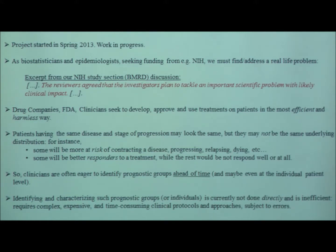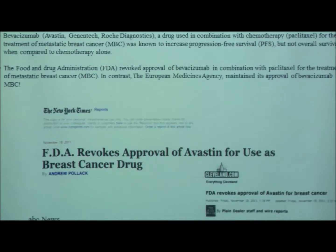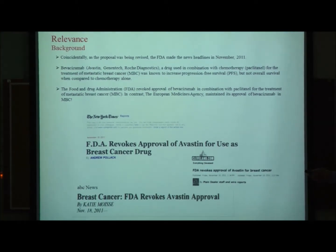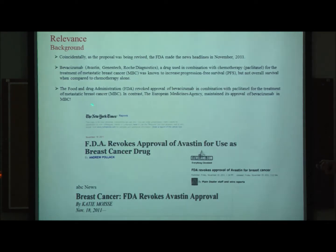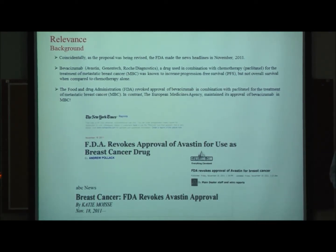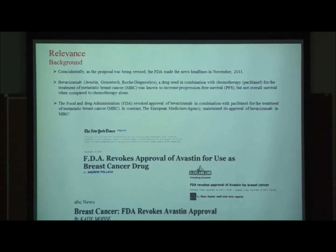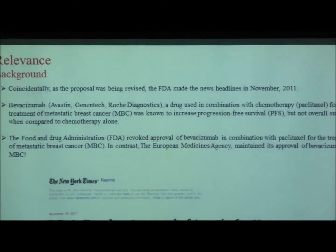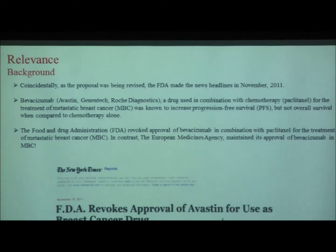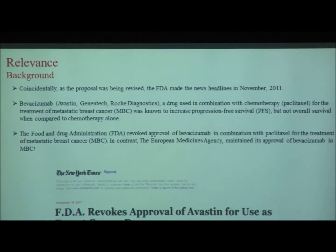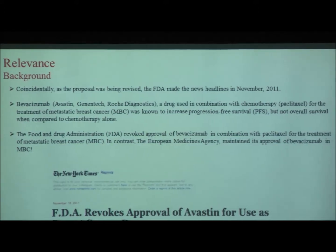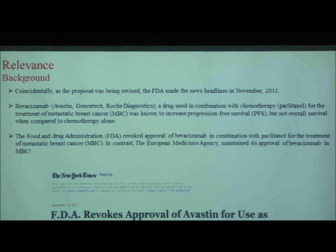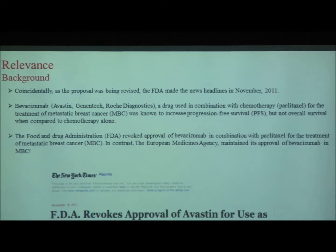The way this is done today is clearly not efficient because it's not addressed in a direct way. The goal of this study is to answer the question of how to identify subgroups and subtypes of people for prognostication ahead of time. At the time we were writing the grant revision, the FDA made news by withdrawing Avastin — Roche's drug for metastatic breast cancer — precisely for its association with a chemotherapy by Paclitaxel. The association was expected to increase overall survival, but instead it increased progression-free survival but not overall survival, and the drug had severe side effects.